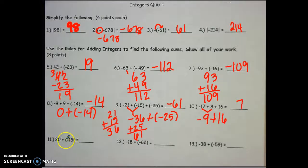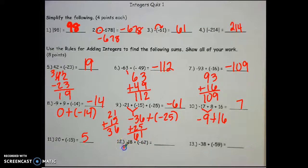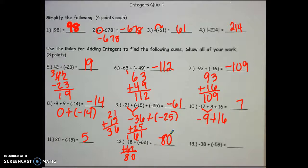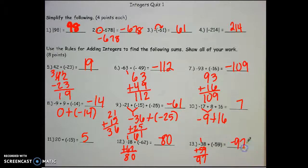For number 11, my signs are different, so I subtract: 20 minus 15 is 5. The bigger number is positive, so my answer is positive 5. For number 12, my signs are the same, so I add: 8 plus 2 is 10, 6 plus 2 is 8. They're both negative, so that's negative 80. For number 13, my signs are the same, so I add: 8 plus 9 is 17, 5 plus 4 is 9. They're both negative, so it's negative 97.